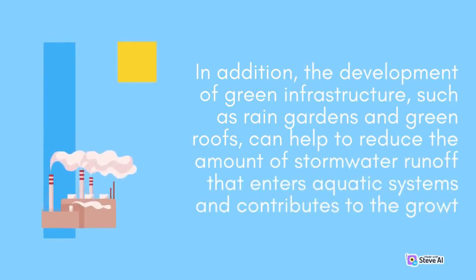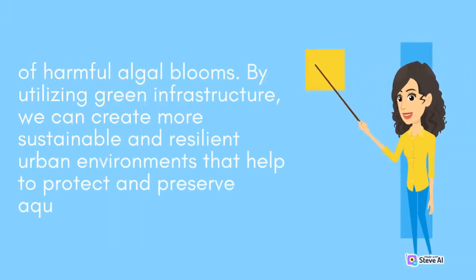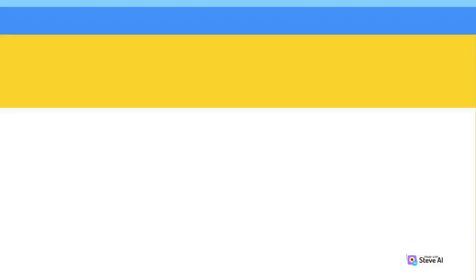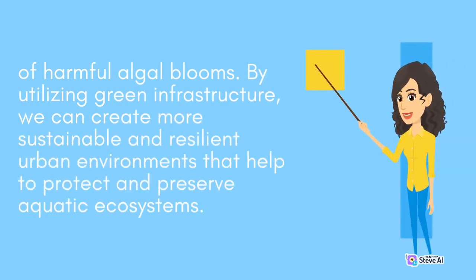The development of green infrastructure, such as rain gardens and green roofs, can help to reduce the amount of stormwater runoff that enters aquatic systems and contributes to the growth of harmful algal blooms. By utilizing green infrastructure, we can create more sustainable and resilient urban environments that help to protect and preserve aquatic ecosystems.